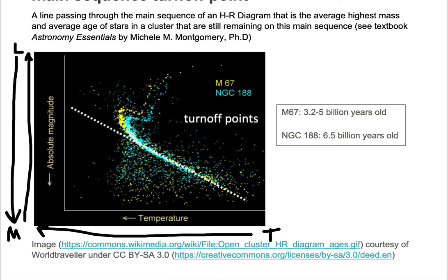We have a main sequence that runs from upper left to bottom right. It's drawn as a line on the diagram, but it's actually a bar, so we're going to draw it a little bit wider. As we can see in this bar, we have several blue and yellow colored objects for the clusters.